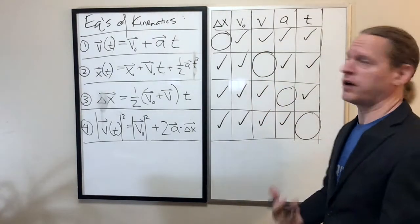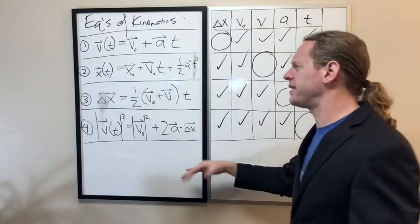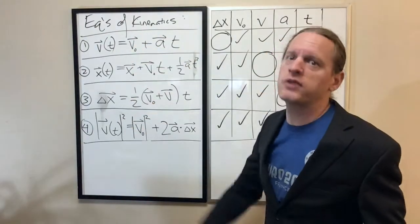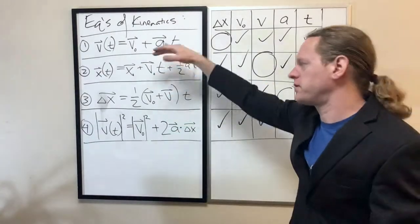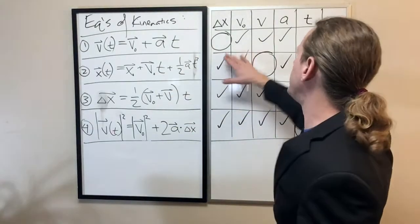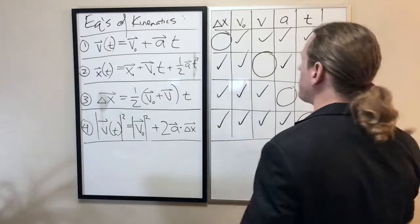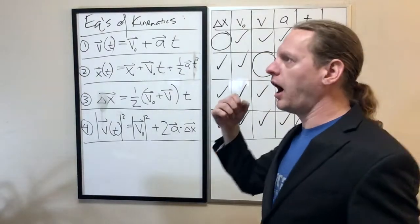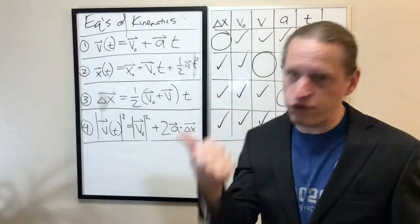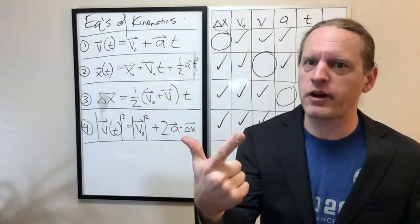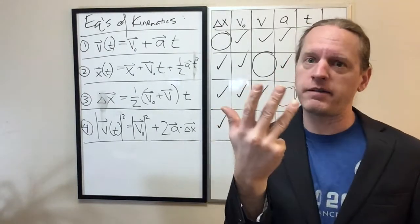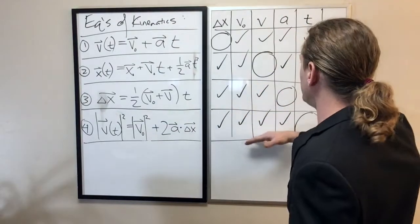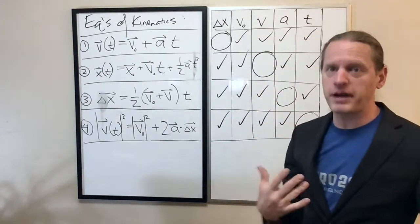So, the way that we use this chart now, and this is kind of a nice thing to, you know, as long as you can somehow memorize these equations, which they're not that tough to memorize, you can always recreate this chart once you write them down properly. And if you're ever given a situation where, for example, you're given the initial velocity, the acceleration, and the time, and you're asked for the final velocity, this chart here is essentially a foolproof way to be able to figure that out.